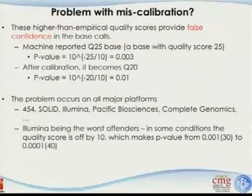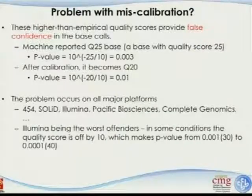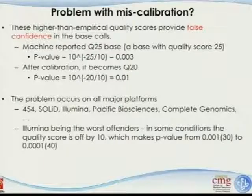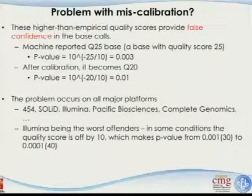To clarify: if p-value is 0.01, that means by random chance, if you sequence 200 nucleotides there are two sequencing errors. This problem occurs on all major platforms. Illumina is among the worst offenders in some conditions — the quality score can be offset by 10, meaning if they report Q40 (the highest), the actual p-value is 10 times worse than that.